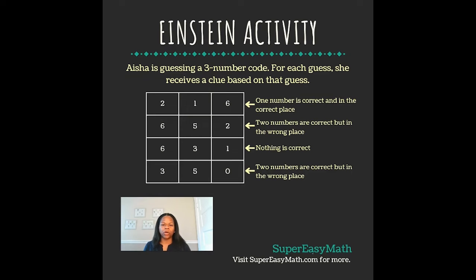For our first row of numbers, our clue is one number is correct and in the correct place. For our second row of clues, we have two numbers are correct but in the wrong place. For our third row of clues, we have nothing is correct, and for our fourth row of clues, we have two numbers are correct but in the wrong place.